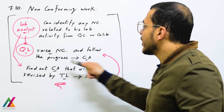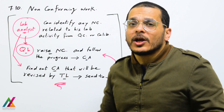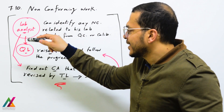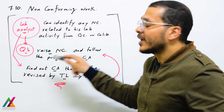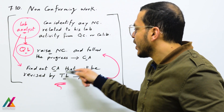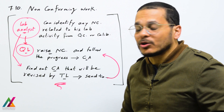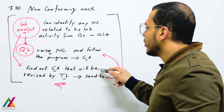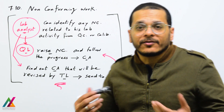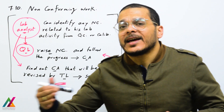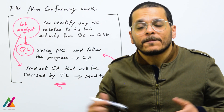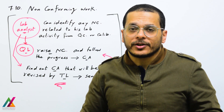The quality lead will follow the progress of solving the issue up to corrective action. The lab analyst shall also find out the corrective action for this non-conformity, and that will be revised by the technical lead of the lab, who will revise and approve it, then send it to the quality lead to approve and close this non-conforming work.